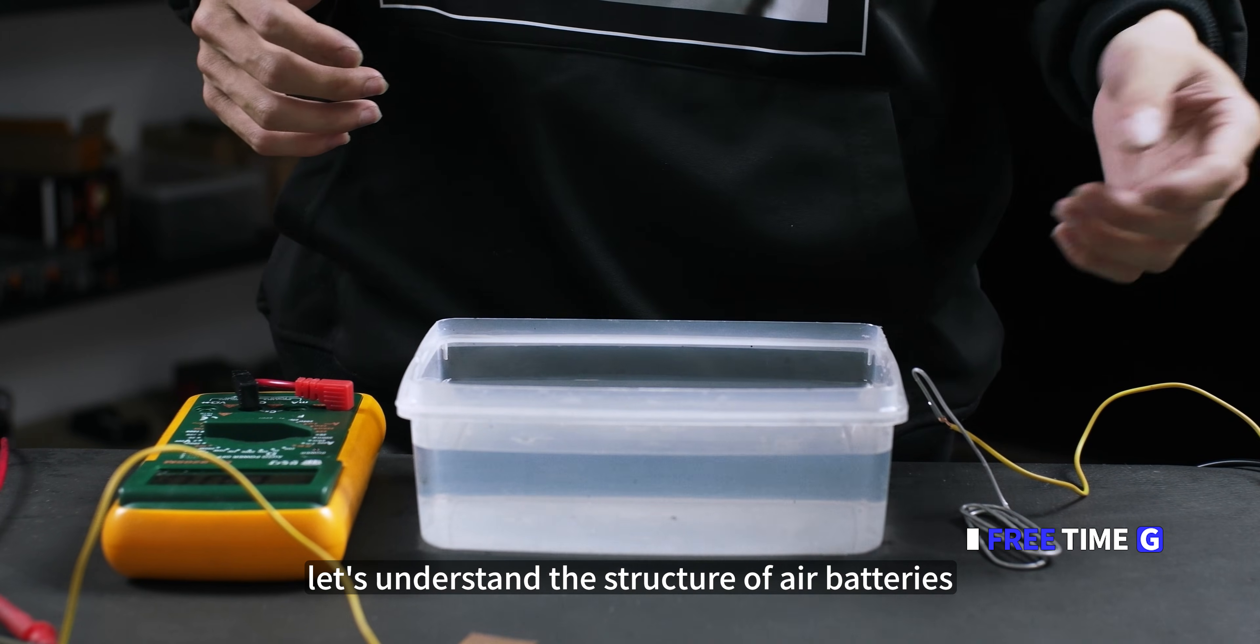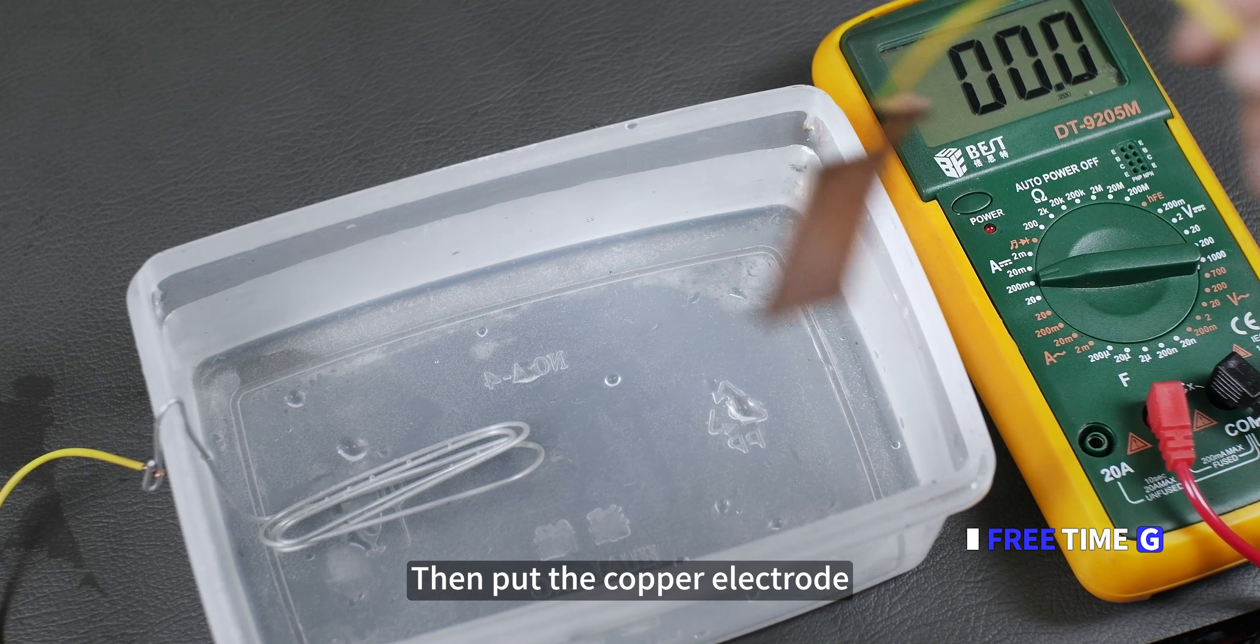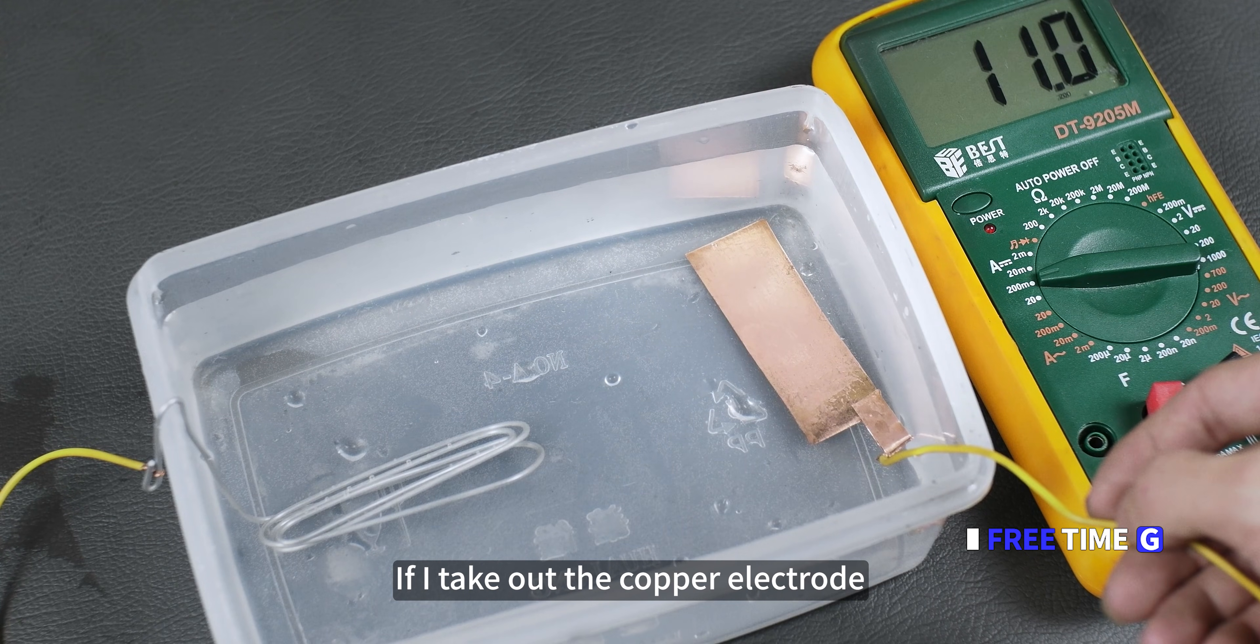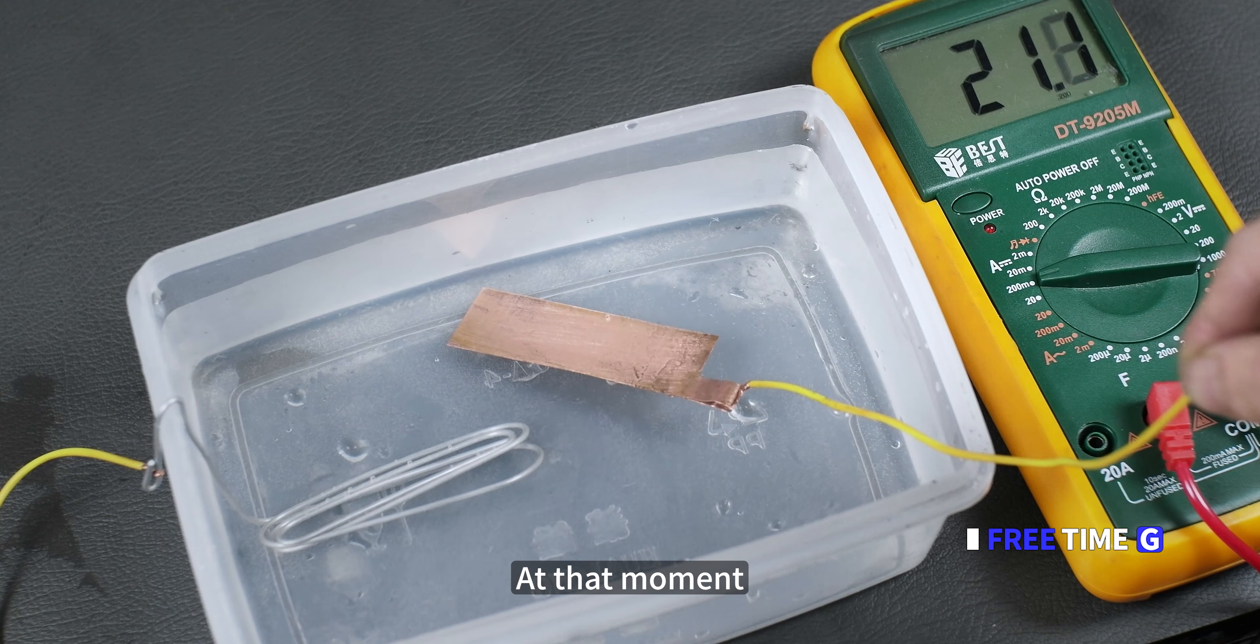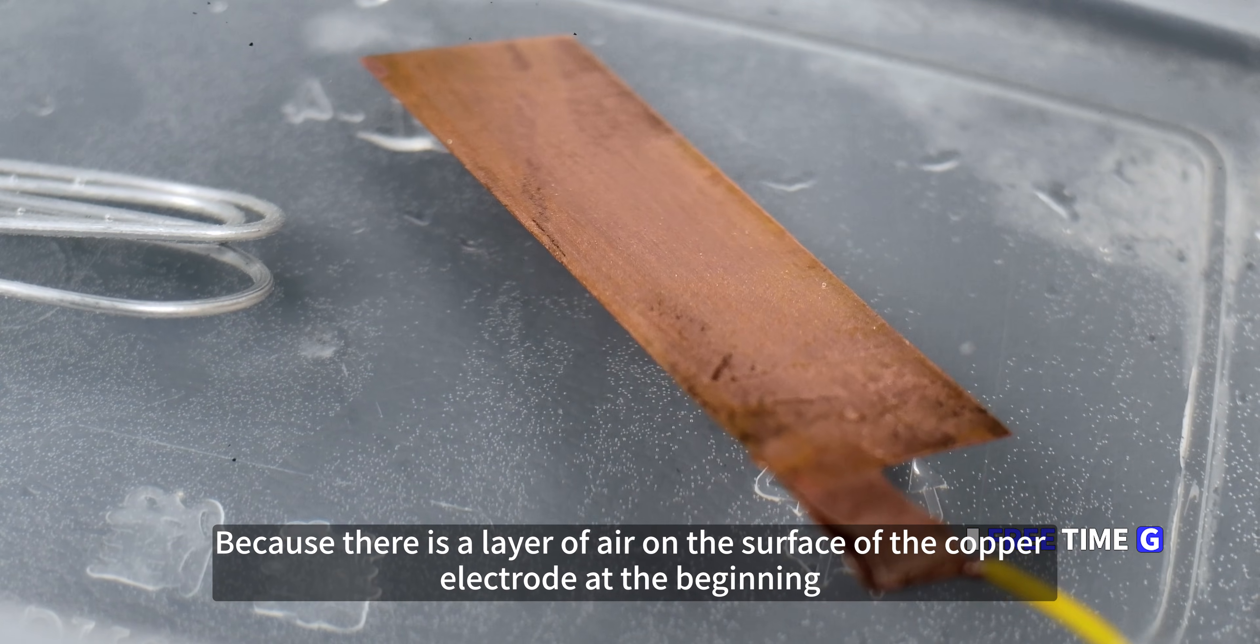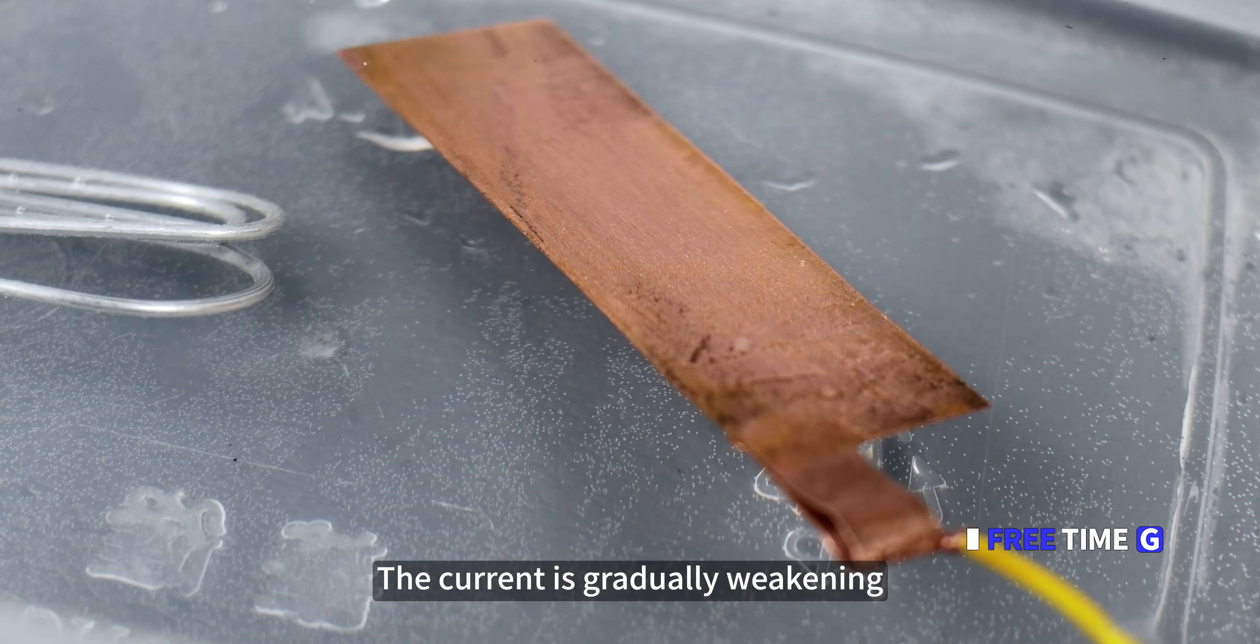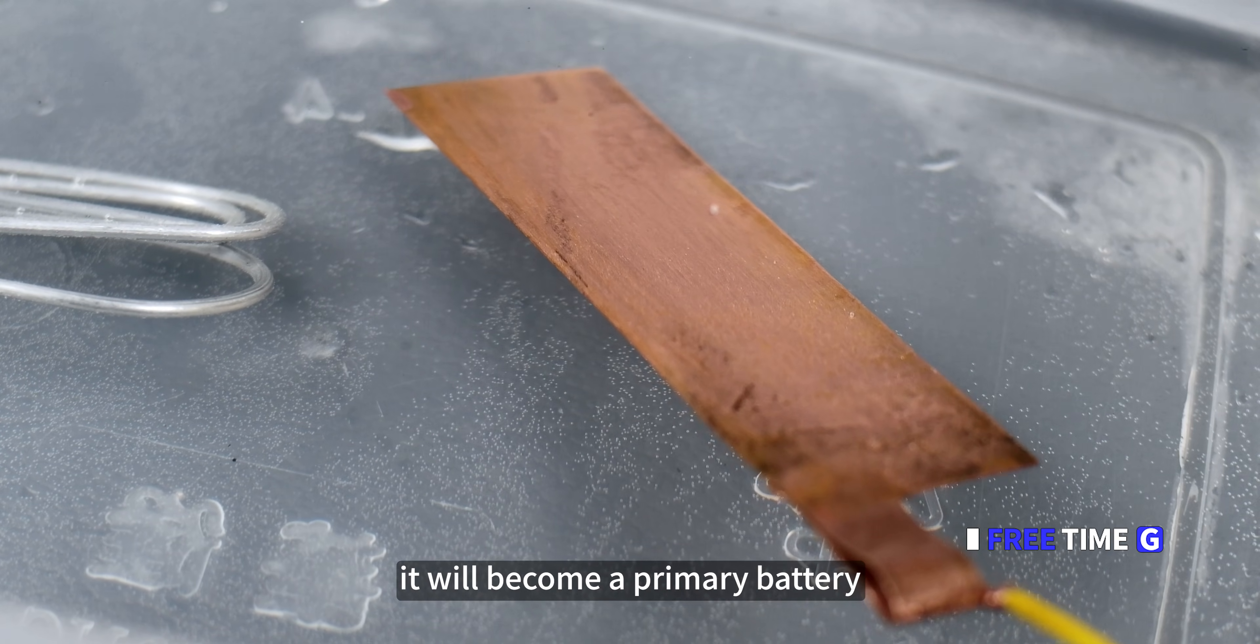First, let's understand the structure of air batteries. Put the aluminum wire in salt water, then put the copper electrode. You will find that there is a current, but this current is gradually weakening. If I take out the copper electrode, wipe off the salt water with a paper towel, then put it in, at that moment the peak current is the highest, then gradually decline. Because there is a layer of air on the surface of the copper electrode at the beginning, the oxygen in the reaction is gradually consumed. Ultimately, it will become a primary battery.